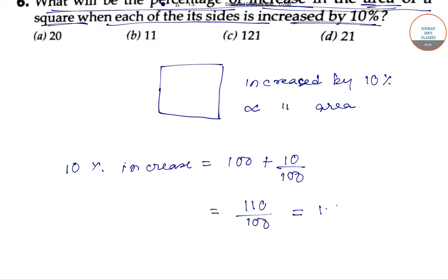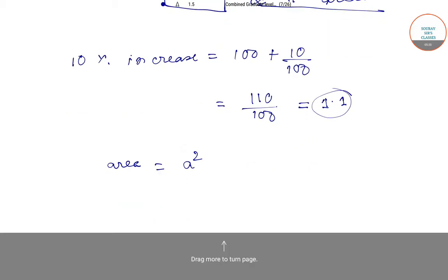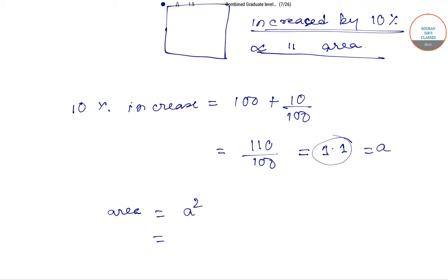Then it will be 1.1. So 1.1 times it increases. Now the area of a square is directly proportional to the side length squared. So as our formula says, for the area